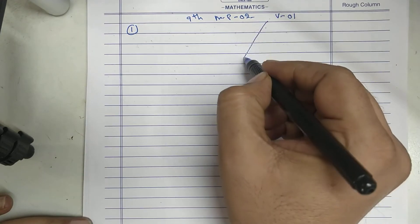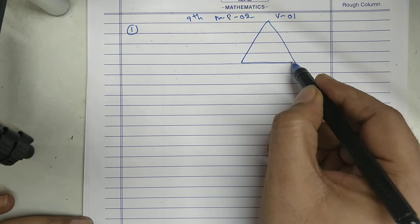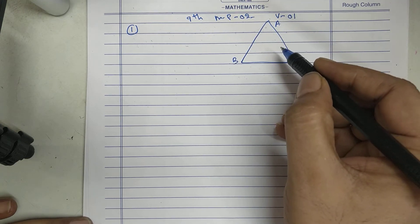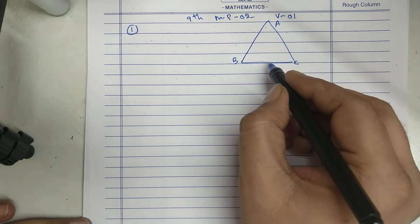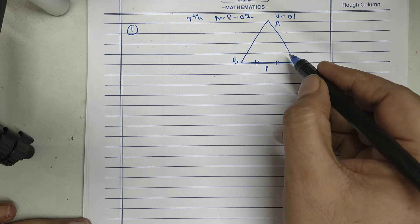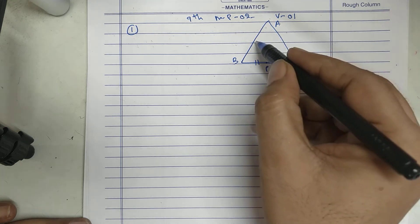In a triangle ABC, P is the midpoint of BC, a line through P and parallel to CA.